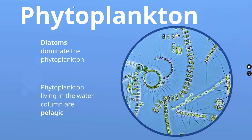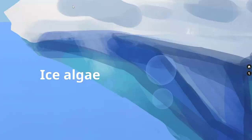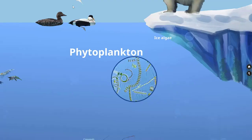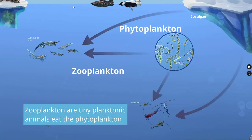Phytoplankton in the ocean are generally considered pelagic, living in the water column. However, in the Arctic Ocean, the sea ice provides a habitat for an additional primary producer: ice algae. Ice algae can live in brine channels in the ice, but are also able to form very noticeable algal mats underneath the ice. The microscopic plankton and mats of ice algae are grazed upon by zooplankton, the primary consumers of the Arctic Ocean.